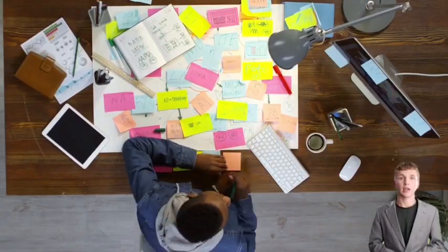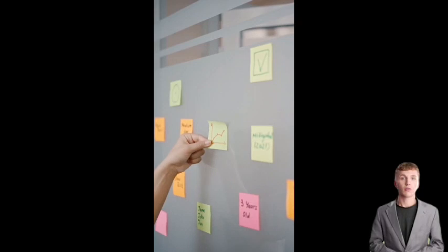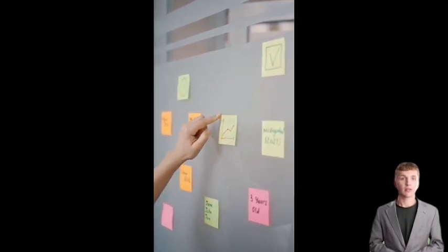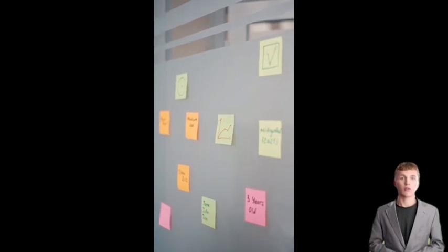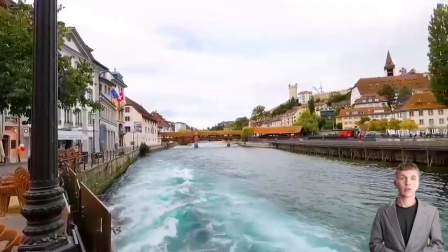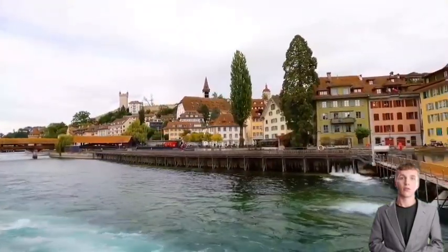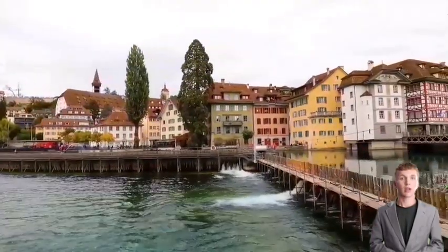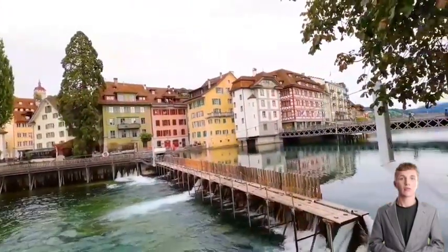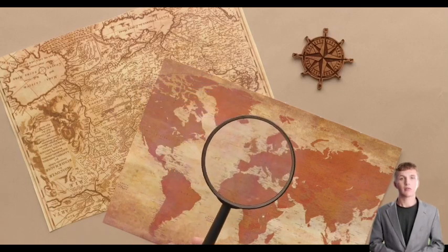Section 2: State of the Art of a Project Proposal. 'State of the art' is a term often used in a project proposal to describe the current state of the project. To write a state of the art proposal, you should first look at what is already out there and then take it further — adding your own perspective and thoughts. You must also have an idea about what you would like to achieve with your research, which will help you write a strong introduction and conclusion.